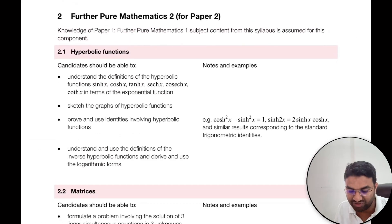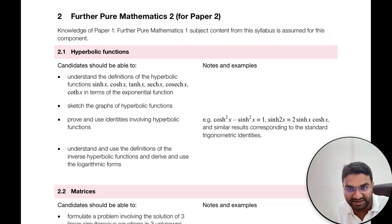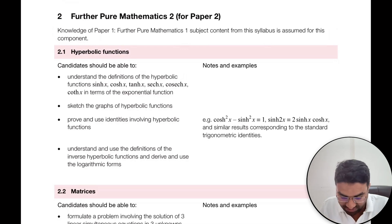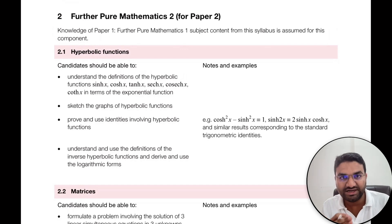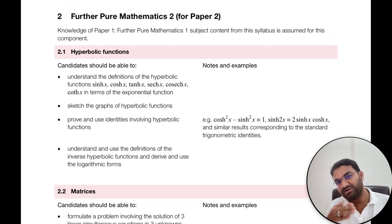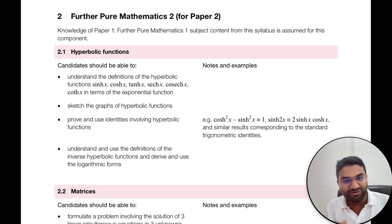Next, we jump onto paper two, Further Pure Mathematics 2. Here, the first part is hyperbolic functions. We need to understand the identities, then graphs, and use the definition of inverse hyperbolic functions, and derive each and every hyperbolic function. This hyperbolic functions section is a kind of introductory part, because we have to use hyperbolic functions in other parts as well — in differentiation and integration.